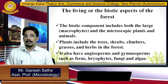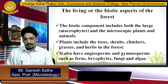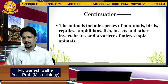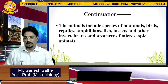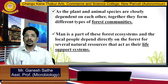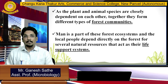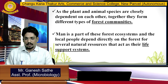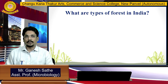The habitat provides a suitable environment for plants, which are categorized into two types: angiospermic plants and gymnospermic plants. Animals include mammals, birds, reptiles, amphibians, fish, insects, invertebrates, and varieties of microscopic organisms. Plants and animals depend on one another and together form a forest community. Humans are also part of the forest ecosystem, and local people depend on it as a life support system for their survival.